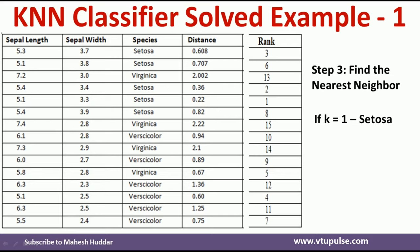Similarly, if the value of k is equal to 2, we need to identify the two examples ranked 1 and 2. The first ranked example belongs to setosa, and the second ranked example also belongs to setosa. So we can say that the new example again belongs to setosa when k = 2.